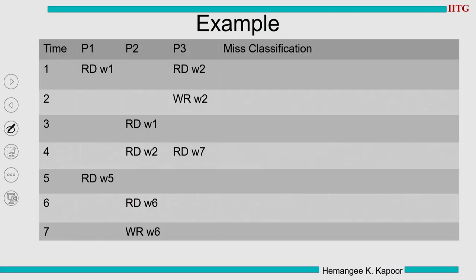I have filled all the events in the first three columns and we are going to fill the miss classification. I would say that you pause the video intermittently, try to solve it, and then restart the video. At time 1, processor P1 and P3 read W1, W2. Initially the cache is empty, so this is the first access and P1 and P3 will incur a cache miss. I cannot categorize the type of miss right now — I will only do so when this particular block gets evicted.